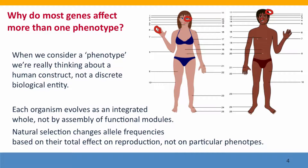Natural selection doesn't favor individuals by selecting for longer or shorter third finger. Instead, natural selection changes allele frequencies based only on their total effect on reproduction. So if a change in DNA sequence increases reproduction, it's going to be favored by natural selection — and that process is independent of whether the increased reproduction is due to changes in bone structure, eye color, hair texture, height, or any other property. Natural selection doesn't mind that genes naturally cause effects on many different aspects of an organism; all it sees is the overall effect on reproduction.